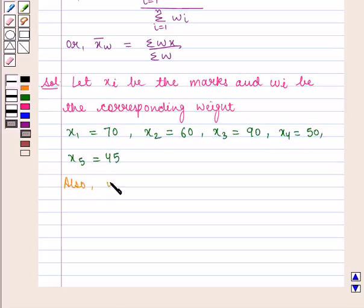Also w1 is given by 2, w2 is equal to 2, w3 is equal to 5, w4 is equal to 5 and w5 is equal to 3.